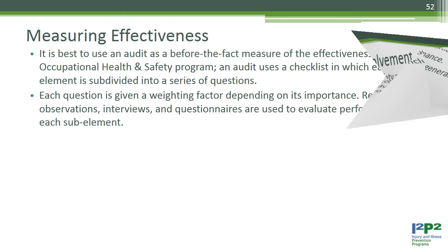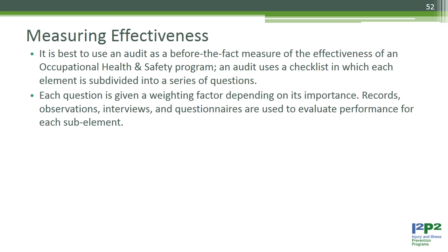Measuring effectiveness. It is best to use an audit as a before-the-fact measure of the effectiveness of an occupational health and safety program. An audit uses a checklist in which each element is subdivided into a series of questions, with each question given a weighting factor depending on its importance. Records, observations, interviews, and questionnaires are used to evaluate performance for each sub-element.